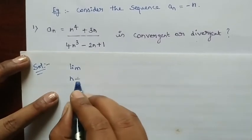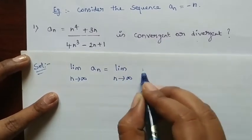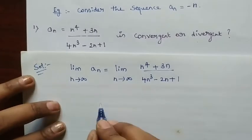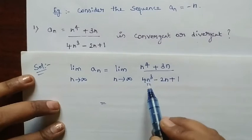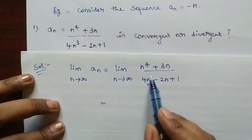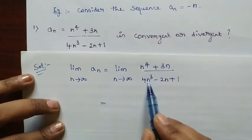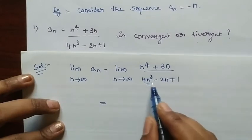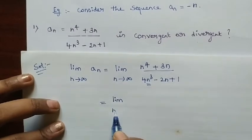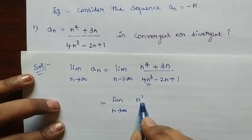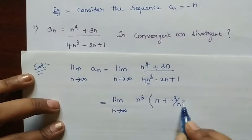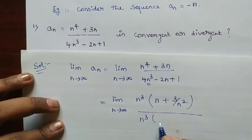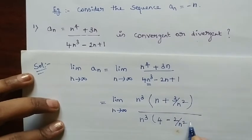Solution: First take the limit on both sides. Limit N tends to infinity of AN equals limit N tends to infinity of N⁴ plus 3N divided by 4N³ minus 2N plus 1. We want to take N³ outside both in numerator and denominator — the highest power in the denominator is N³. Taking N³ commonly outside in the numerator gives N plus 3 by N², and taking N³ commonly outside in the denominator gives 4 minus 2 divided by N² plus 1 by N³.